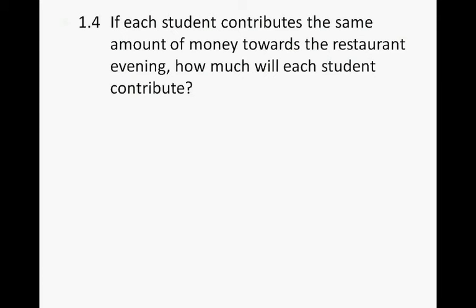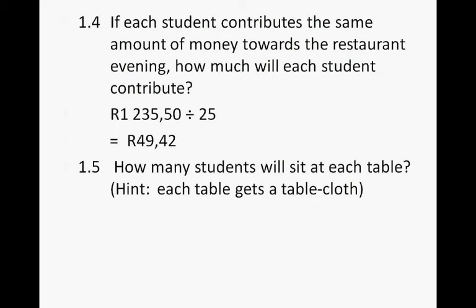If each student contributes the same amount of money towards the restaurant evening, how much will each student contribute? You take the total amount — 1,225 rand 50 cents — divided by 25 students, and each student will have to pay 49 rand 42 cents. How many students will sit at each table? Each table gets a tablecloth — that's the hint. So 25 students divided by 5 tablecloths means 5 students at a table.